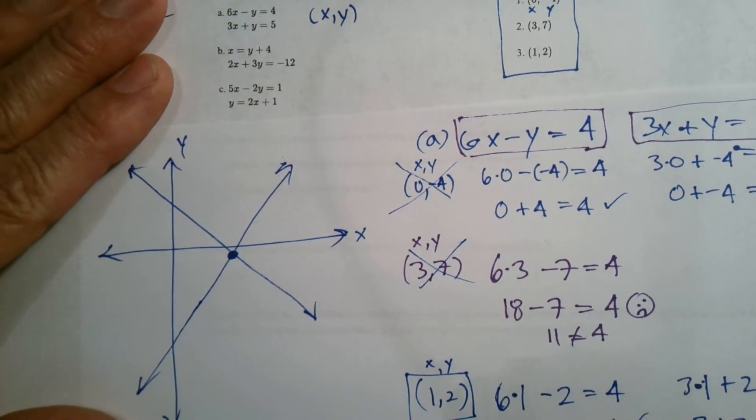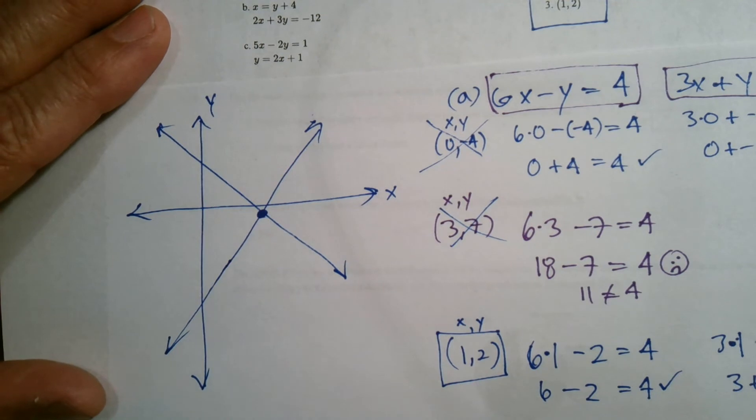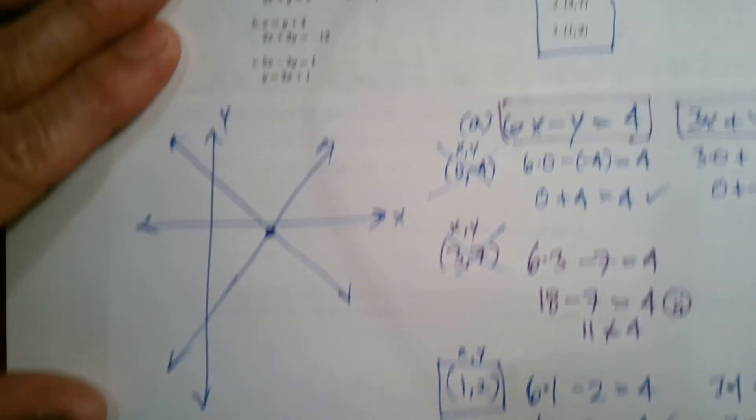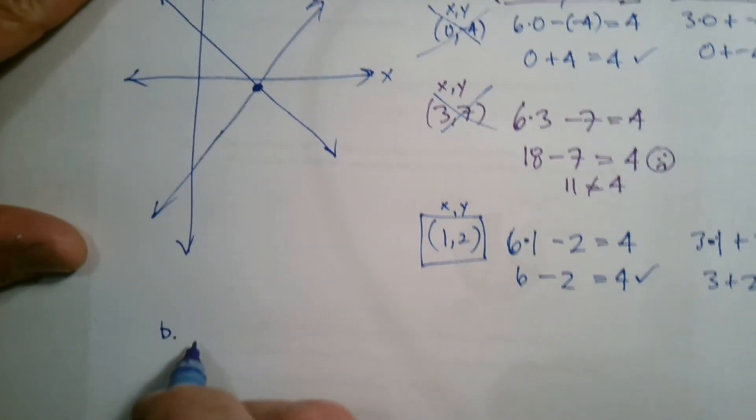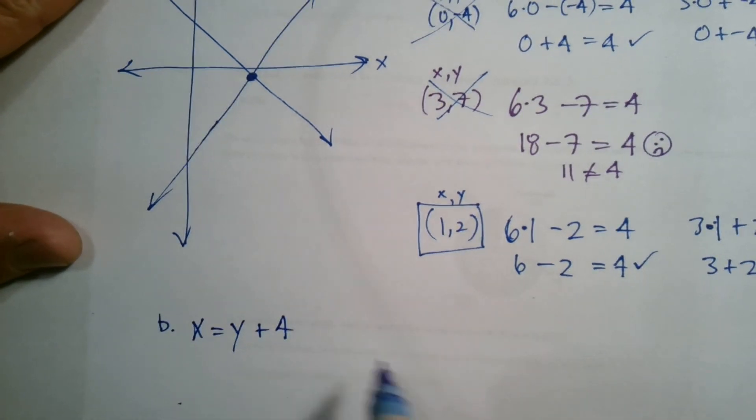So let's look at, let's try b. So b, again, b I'm going to write out next to each other. So b, I'll just write it out on this paper so you can see it here. So it's x equals y plus 4, and the other one is 2x plus 3y equals negative 12.